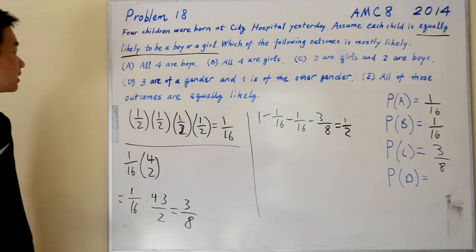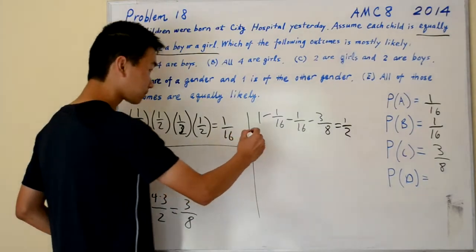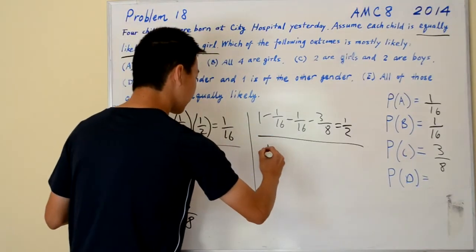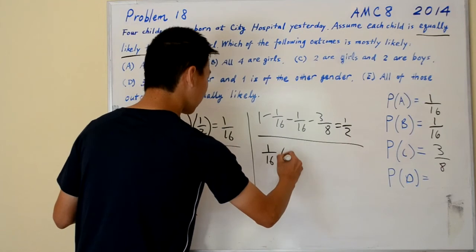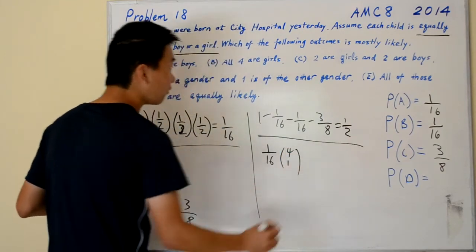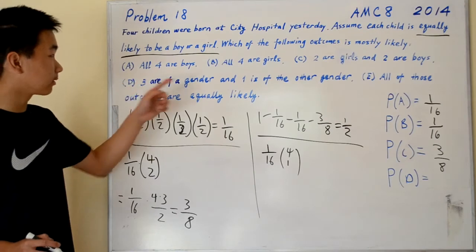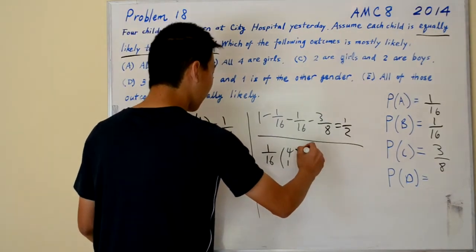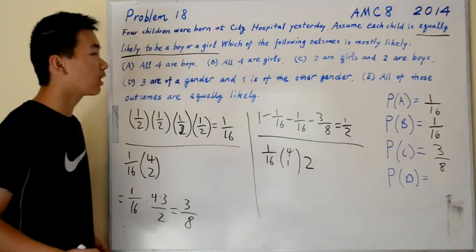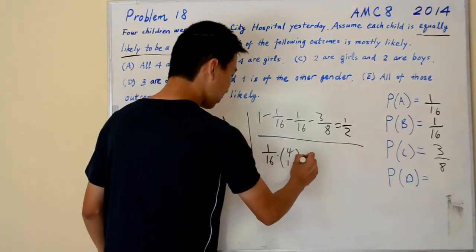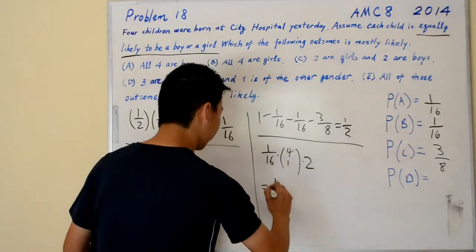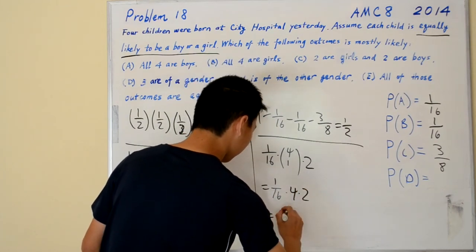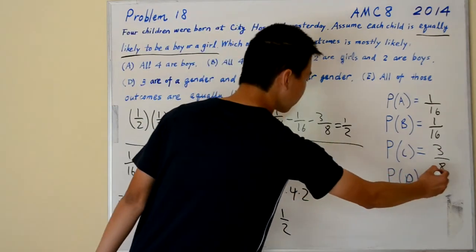However, for completeness, we're going to solve it the long way as well. So again, we start off with one over sixteen. And then we multiply it by four choose one to pick which child is the one that's by himself or herself. And then we multiply it by two because that child could either be a boy or a girl. So this equals one over sixteen times four times two. And that equals one half. And that's the same as over here, so we know we're correct.